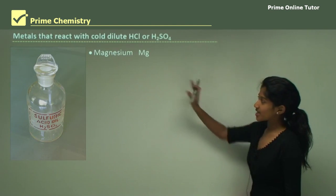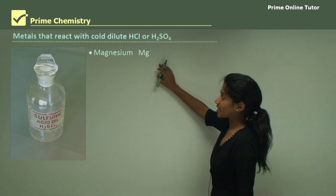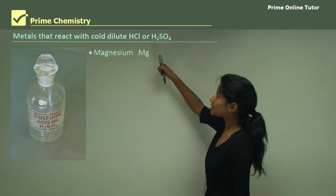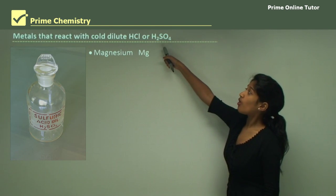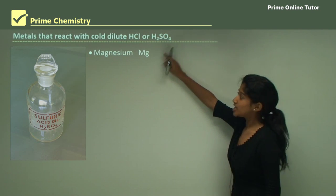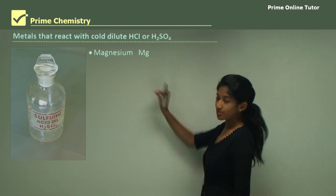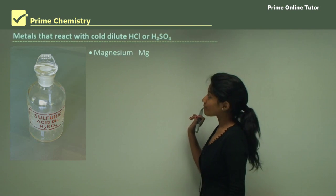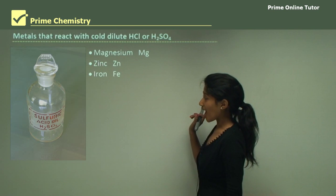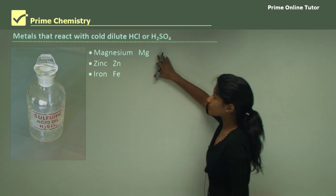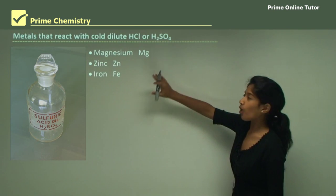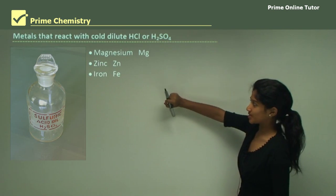Let's take magnesium. These elements — magnesium, zinc, and iron — react with acids which are cold and dilute.